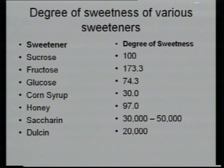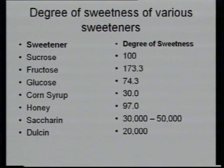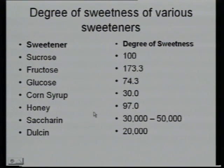The sweetness level is important in oligosaccharides. In fruit and vegetables, mainly monosaccharides and disaccharides are present. For comparative purposes, the sweetness of sucrose is kept as 100. Fructose is 173, glucose is 74, corn syrup is 30, honey is 97. Some artificial sweeteners available in the market, known as saccharine, have very high sweetness.